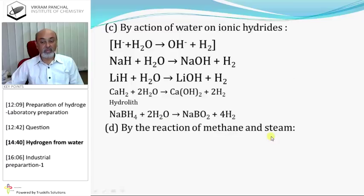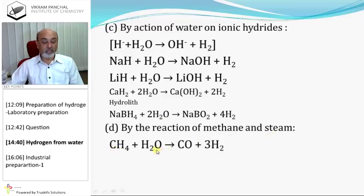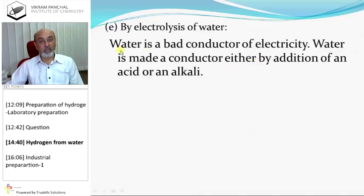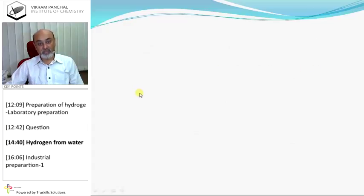By the reaction of methane and steam: methane reacts with steam and produces hydrogen gas. Electrolysis of water: water is a bad conductor of electricity and must be made conducting by the addition of an acid or an alkali.